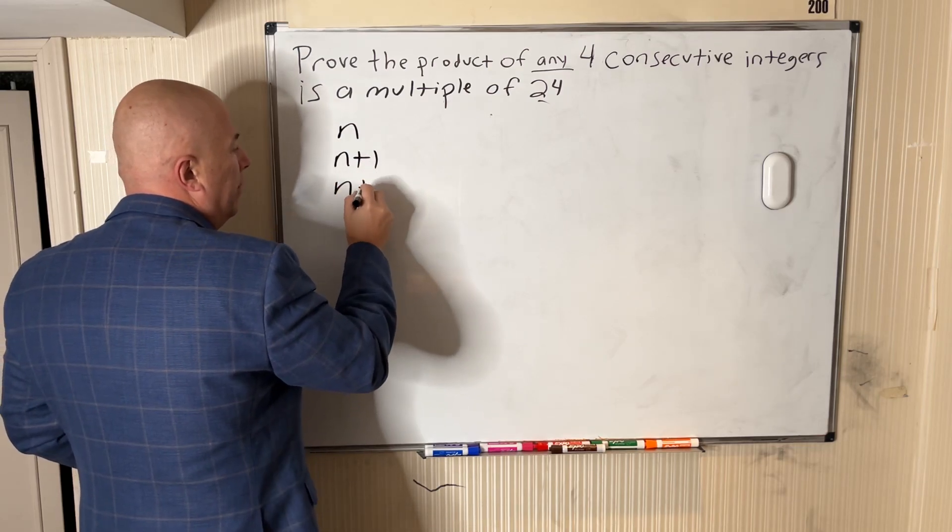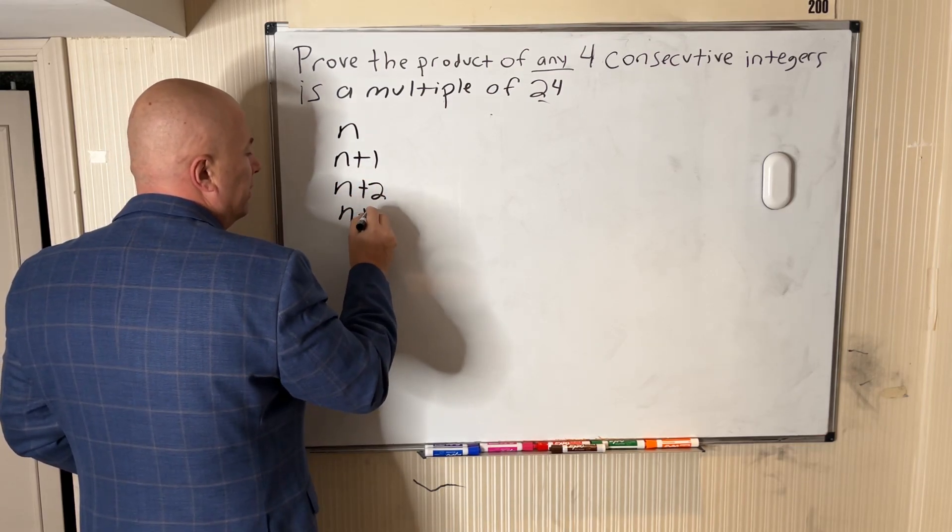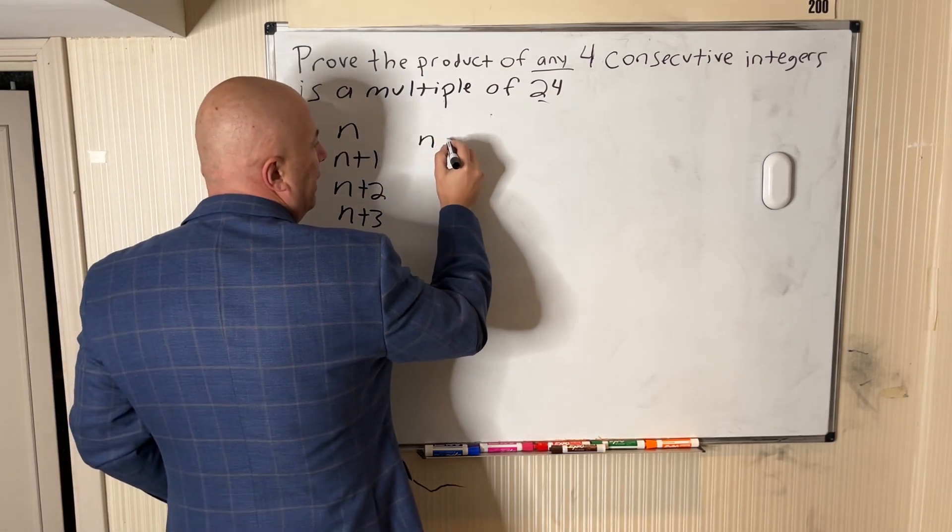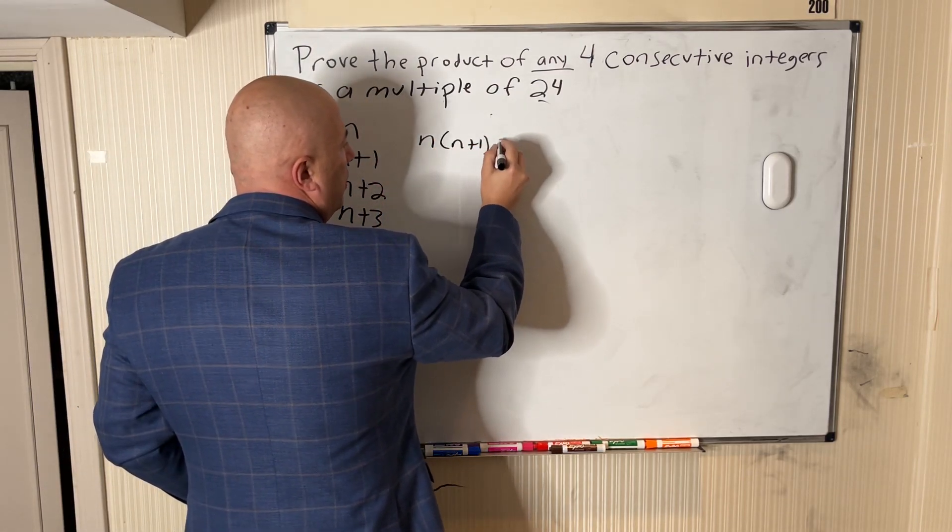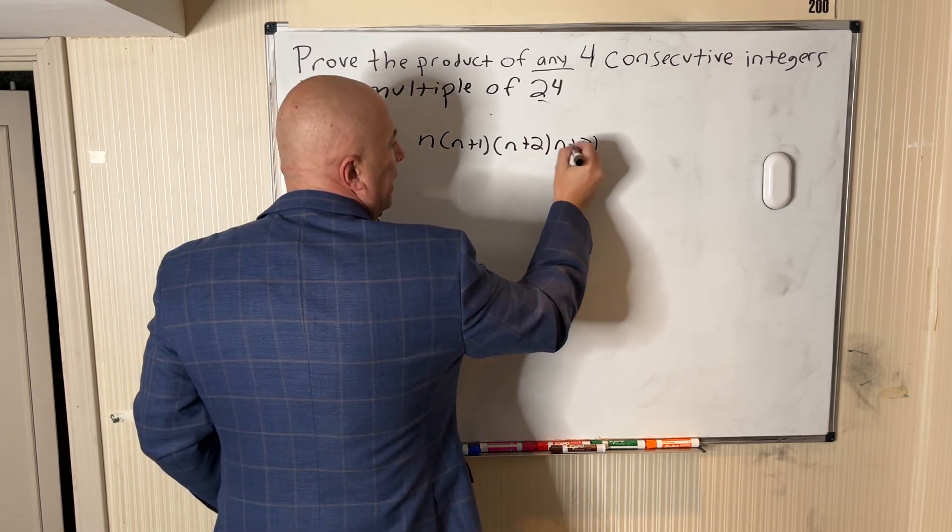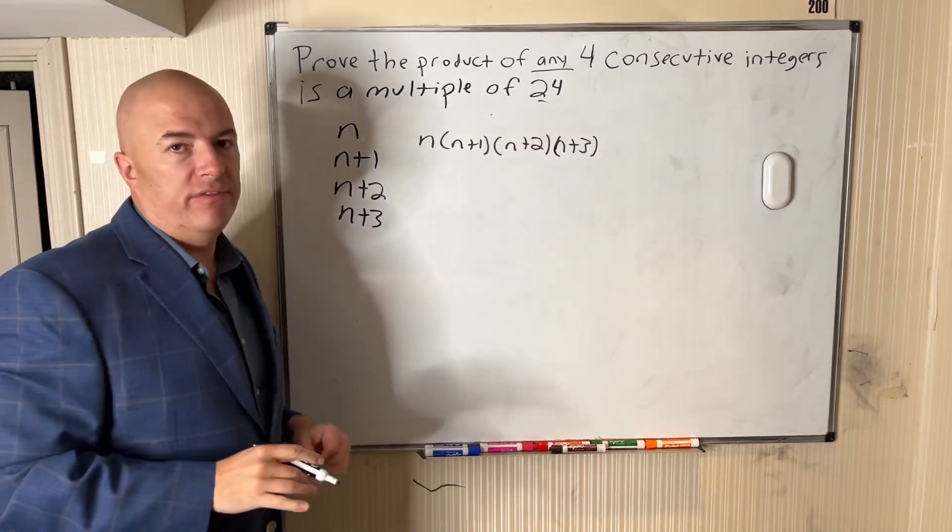Then n+2, then n+3. So the idea is to prove that the product of n times (n+1) times (n+2) times (n+3) is always a multiple of 24.